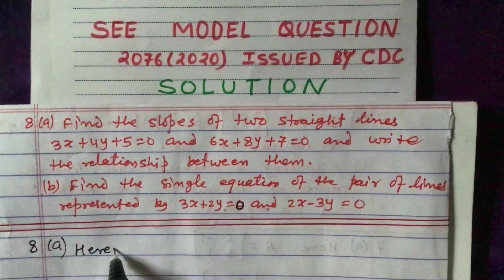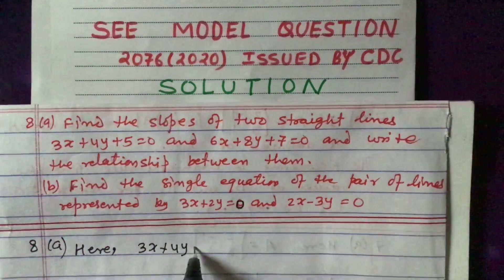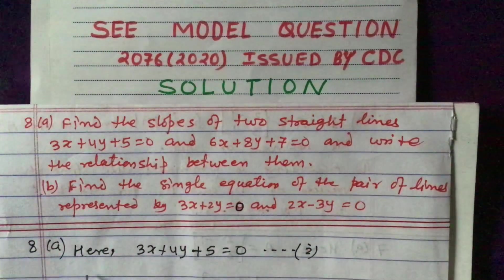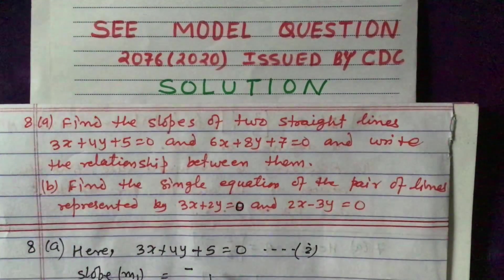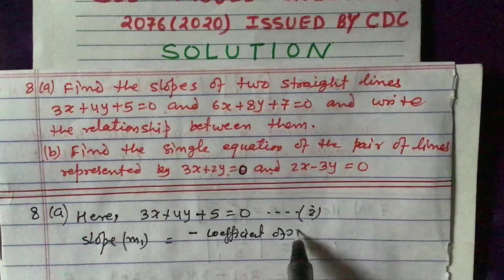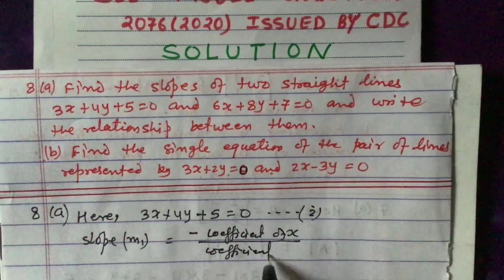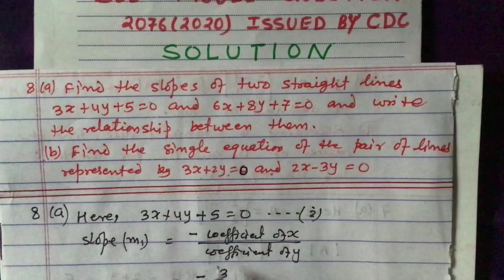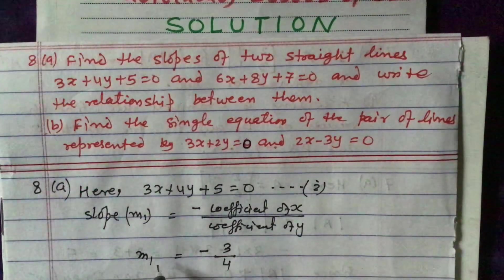The first equation is 3x plus 4y plus 5 equals 0 — let us call this equation 1. The slope of this line is given by: slope m1 equals minus coefficient of x divided by coefficient of y. So m1 equals minus 3 divided by 4, giving us m1 equals minus 3 by 4.